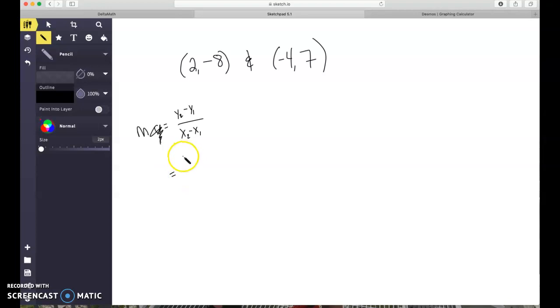So when I'm finding slope, I'm going to do 7 minus negative 8 over negative 4 minus 2. Following order of operations, I know that's actually 7 plus 8 over negative 4 minus 2. 7 plus 8, that gives me 15.